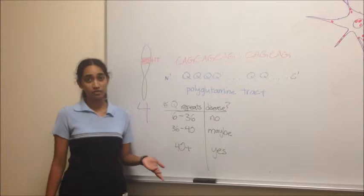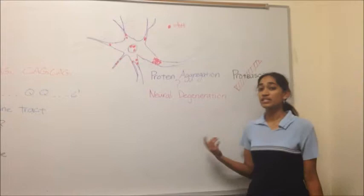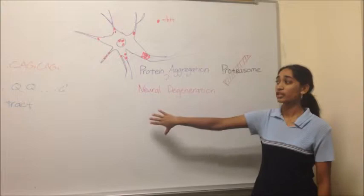In neurons, this mutant protein is especially dangerous because it causes protein aggregation through interactions of the polyglutamine tract, making it impervious to proteasome degradation. This is one of the proposed hypotheses for why this disease causes neural degeneration.